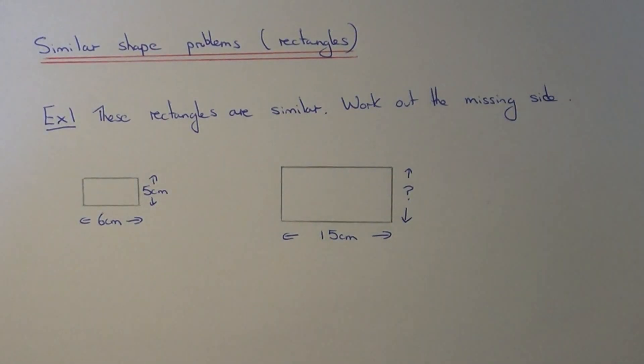Today I'm going to show you how to work out the missing side of two similar rectangles. First of all, you need to remember that similar shapes are basically shapes which are enlargements of each other. So the matching sides have been enlarged by the same scale factor.